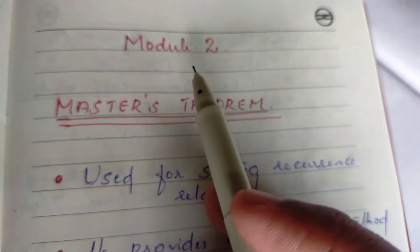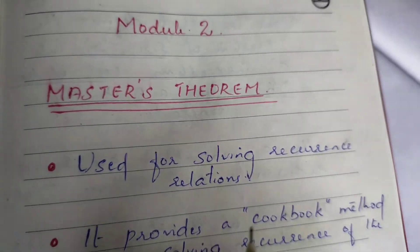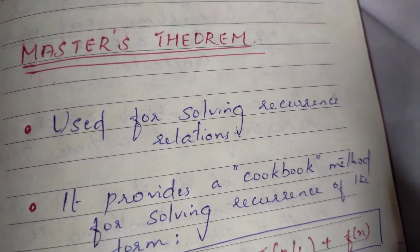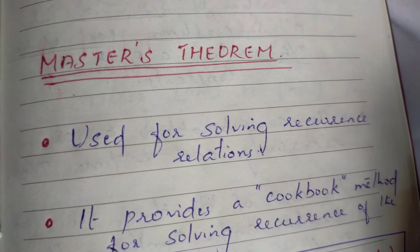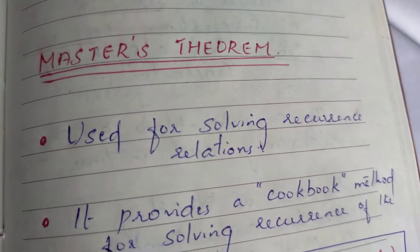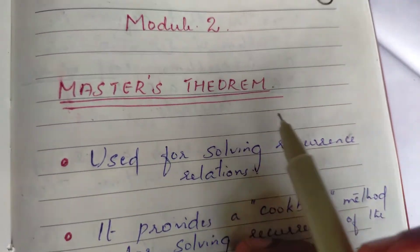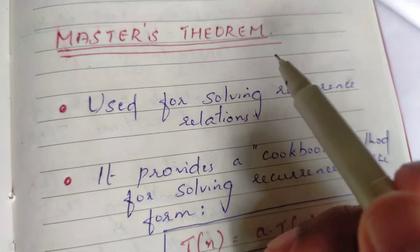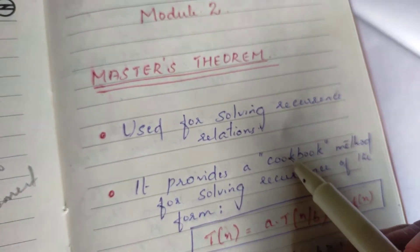The second module starts the first topic of Master's Theorem. We have to learn the Recurrence Relations solving methods: Substitution Methods, Iteration Methods, Recurrence Tree Methods, and Recursion Tree Methods. This method is called Master's Theorem, also known as the Cookbook Method for solving Recurrence Relations.